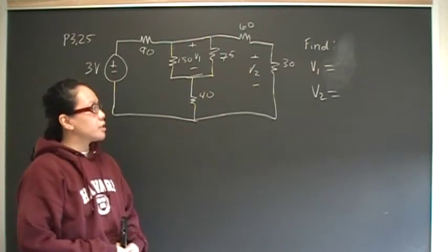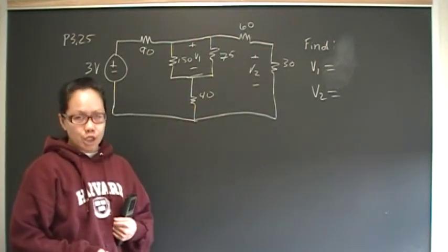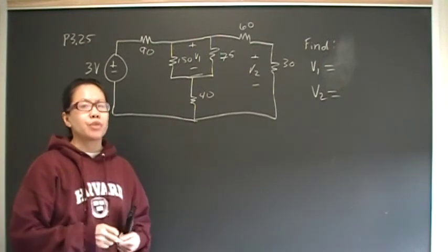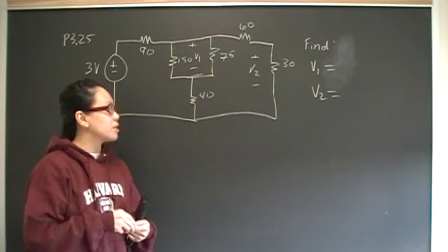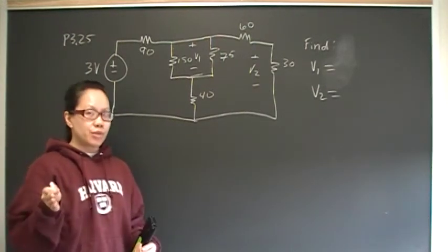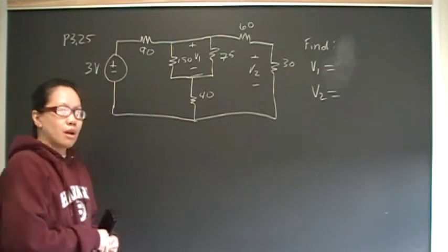The second hint is, once you make that recognition, simplify the circuit and use voltage division twice to find V1 and V2. Okay, so pause your video now and try it.